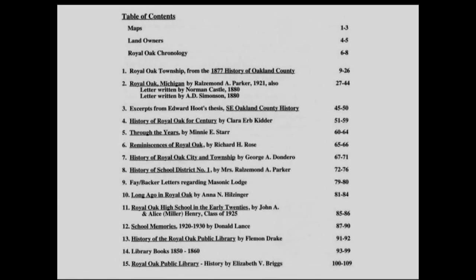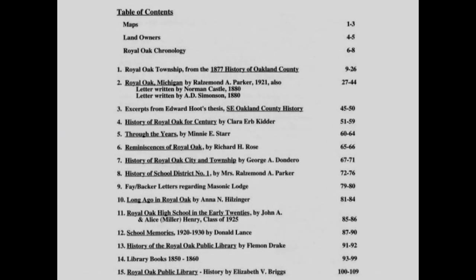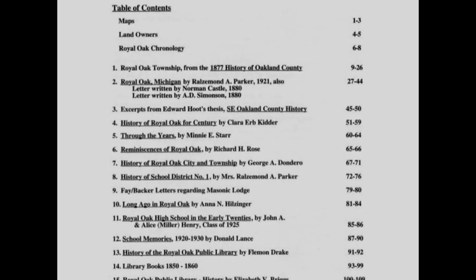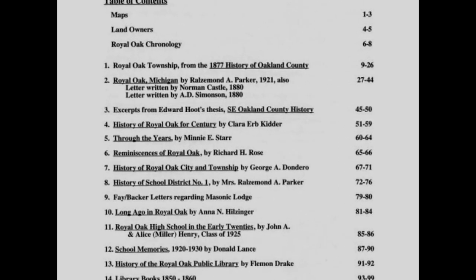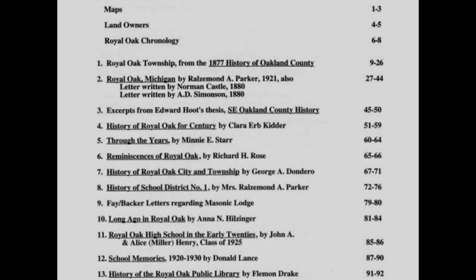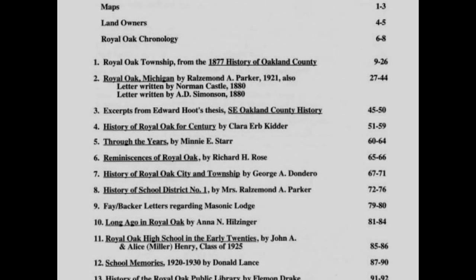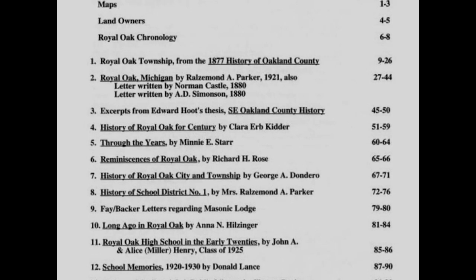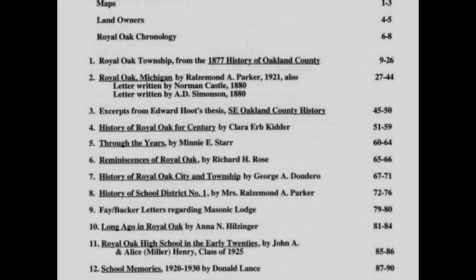For example, it includes a section on the 1877 history of Oakland County — that big book I showed in an earlier class. The reason being that the 1877 history of Oakland County is not so accessible. There aren't that many copies around, they're very expensive, it's not online to my knowledge, so you'd have to go to a library. What we've done is reproduced a portion of that book in Twigs and Acorns.